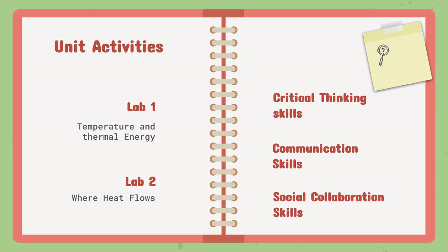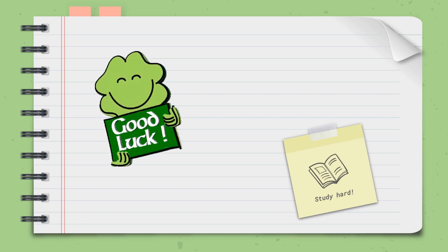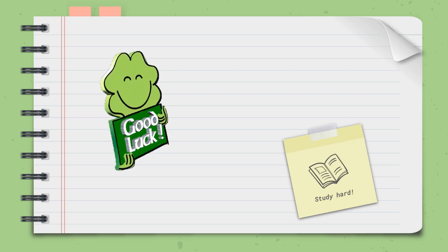As for the unit activities, we are going to have the first lab on temperature and thermal energy, and the second lab on where heat flows. The ATL skills for this unit include critical thinking skills, communication skills, and social collaboration skills, which we will implement through different types of activities. Good luck, grade 6 — study hard for this unit. I am always here to help you and answer all your questions. I hope this unit will bring you a lot of knowledge.